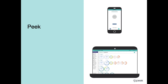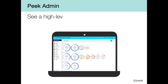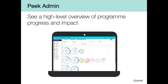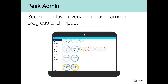The second component of PIC software is PIC Admin. This is a platform where data from PIC Capture is used to track progress by checking whose need is and is not being met. It allows you to see a high-level overview of program progress and impact, enabling programs to see who is and isn't having their need met in order to address barriers and improve program impact.